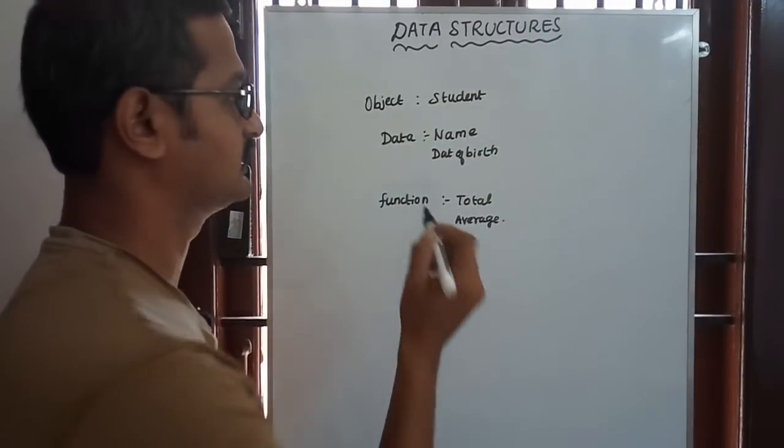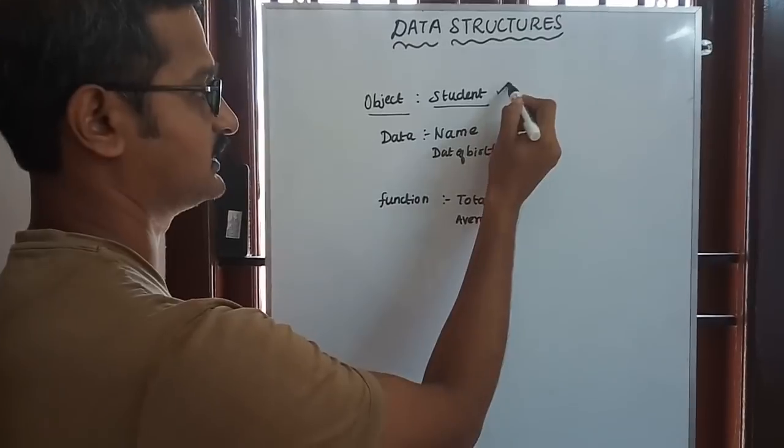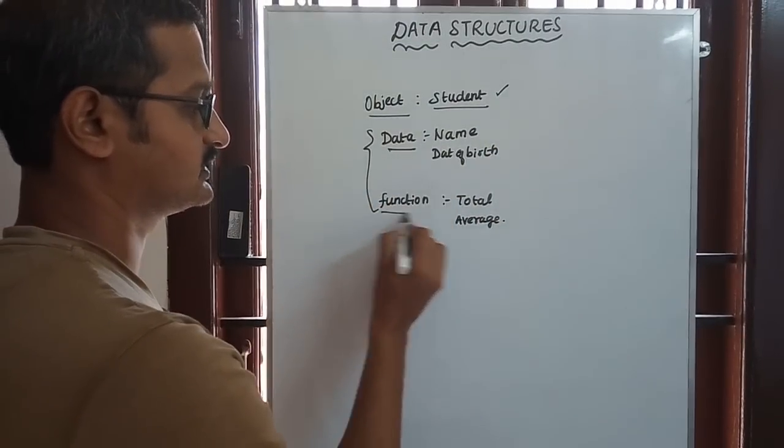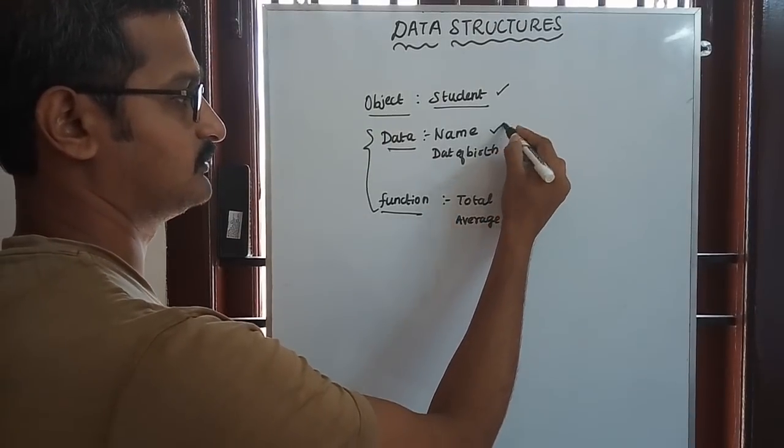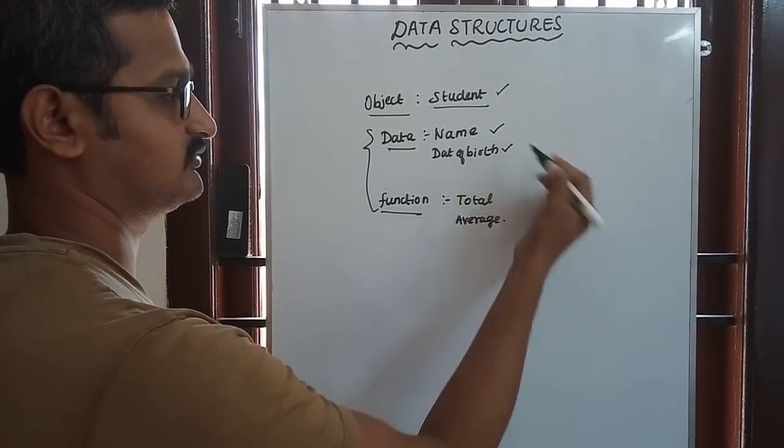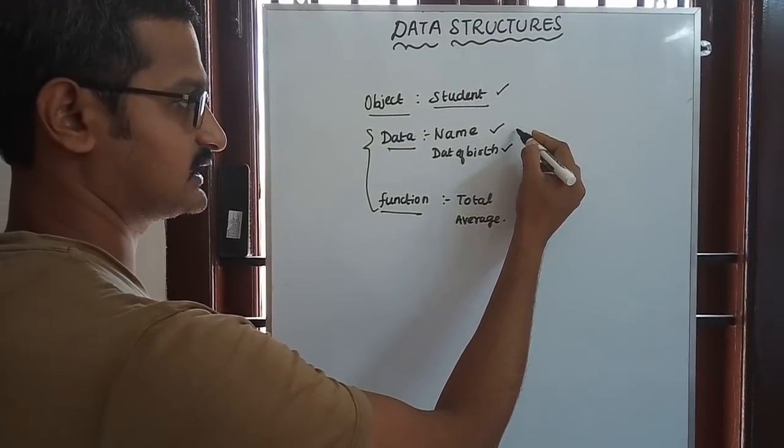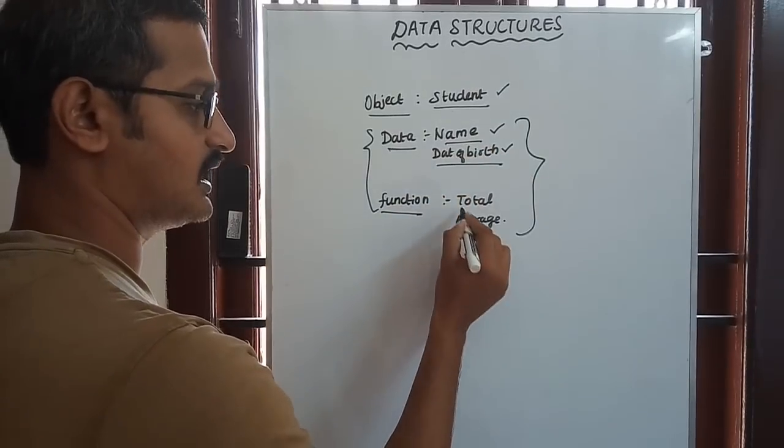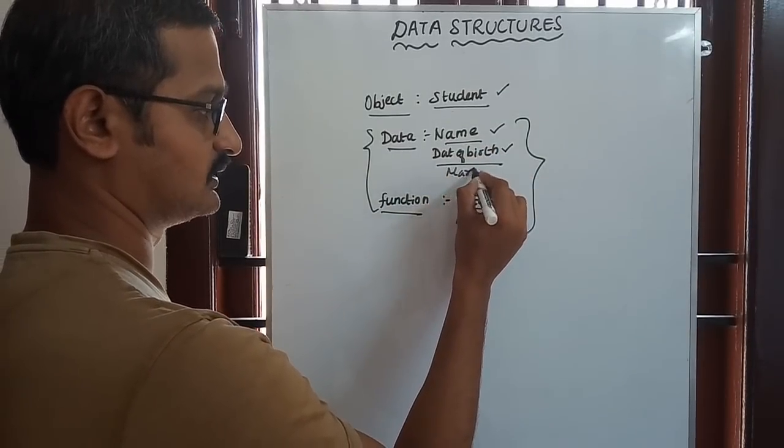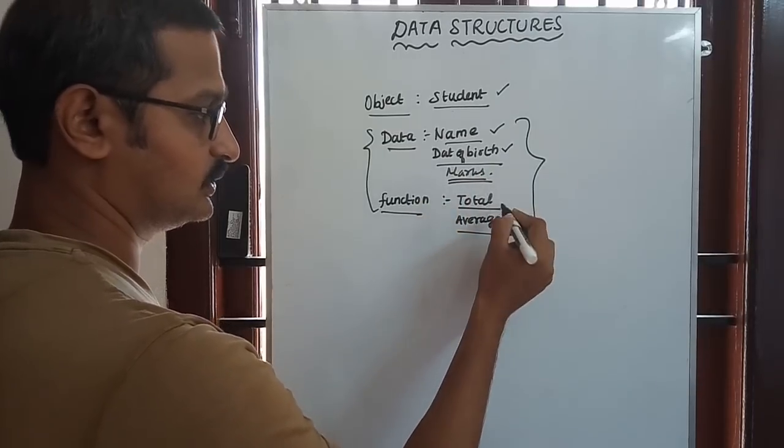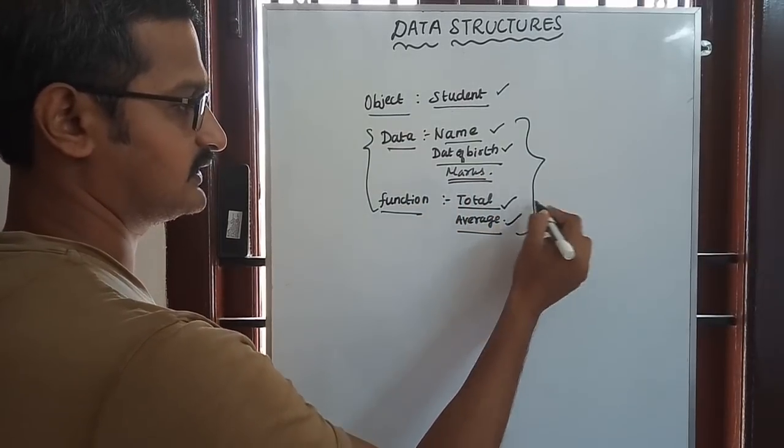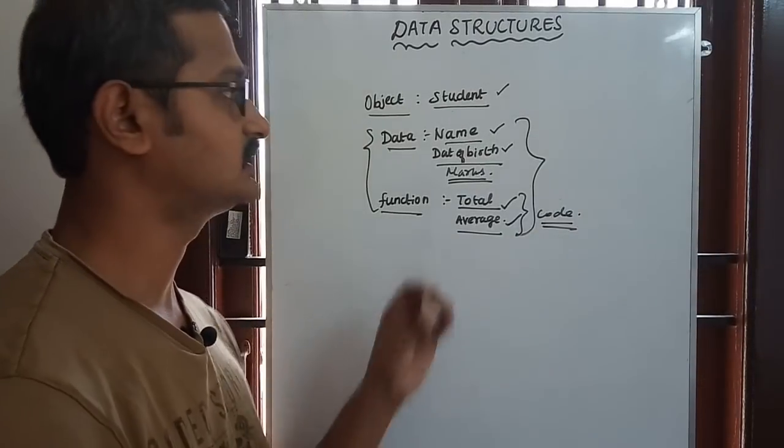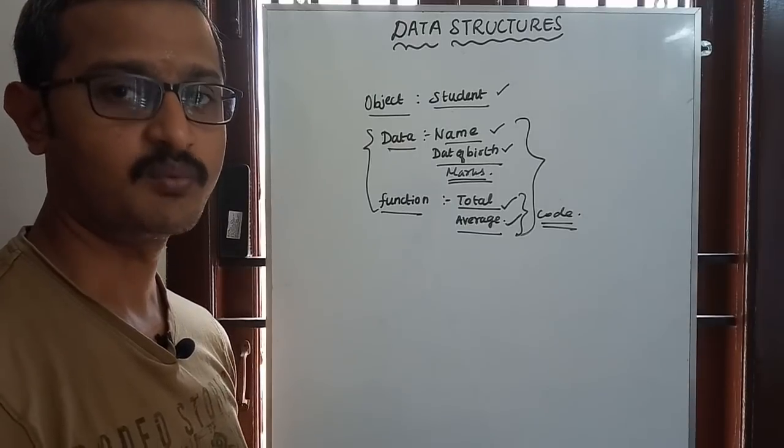If we take an object like student, an object can contain both data and functions. For example: the name of the student, date of birth. With respect to this student, the name, date of birth, marks - total marks and average - these are functions, this is code.